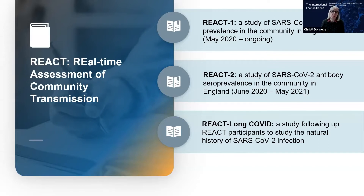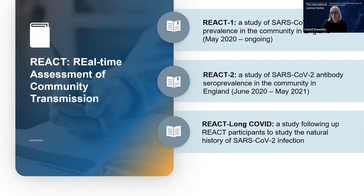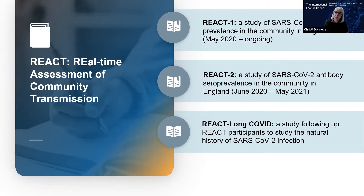REACT, which stands for Real-Time Assessment of Community Transmission, is actually a programme of studies. That includes REACT-1 — a set of surveys looking at the prevalence of infection, testing for antigen infection using PCR, with individuals self-swabbing themselves and submitting samples for PCR testing. REACT-1 finished its last survey in March 2022. REACT-2 was a study of SARS-CoV-2 antibodies — what the seroprevalence was in the population — requiring a blood sample to be collected.